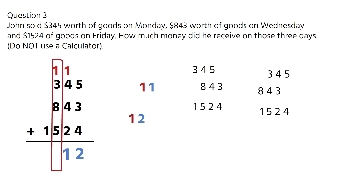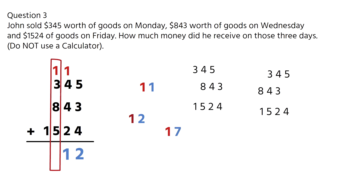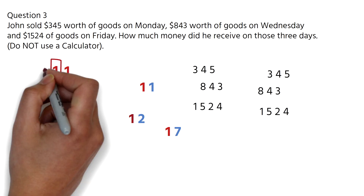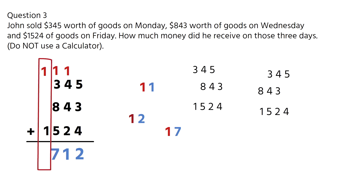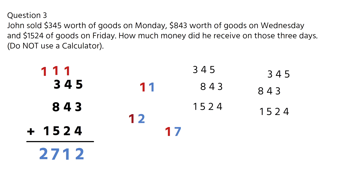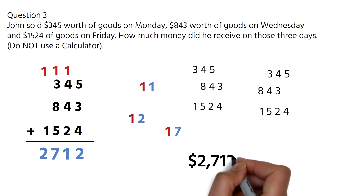We move to the next column. We have 1 plus 3 plus 8 plus 5, which is 17. We have a two-digit number, so we will keep the 7 and carry the 1 to the next column. Finally, we have 1 plus 1, which is 2. So our final answer is $2,712.